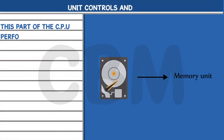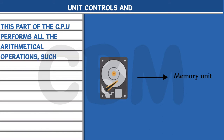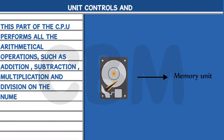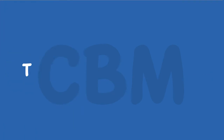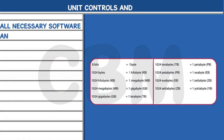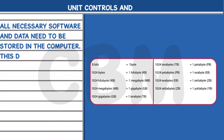The Arithmetic and Logic Unit (ALU): This part of the CPU performs all arithmetic operations such as addition, subtraction, multiplication, and division on numerical data as directed by the control unit.